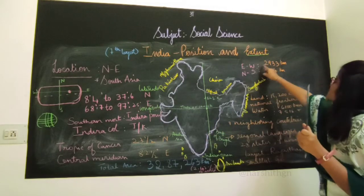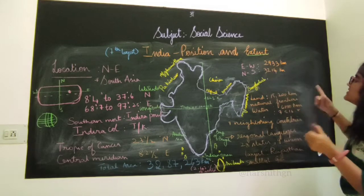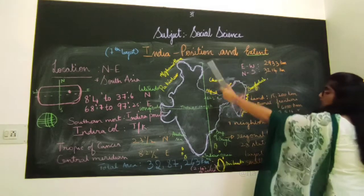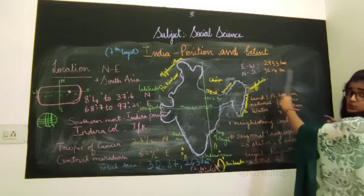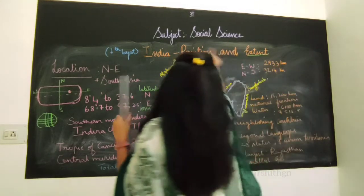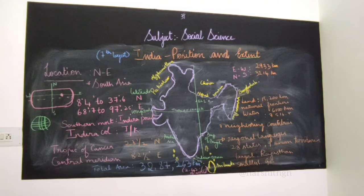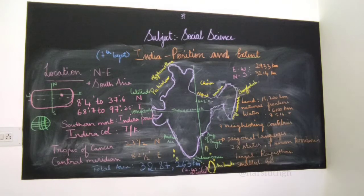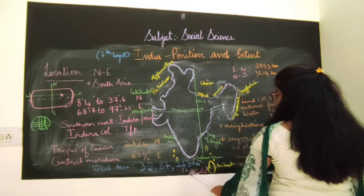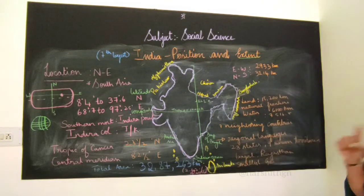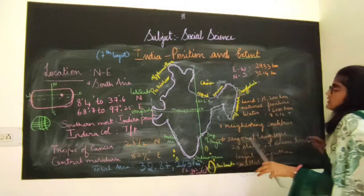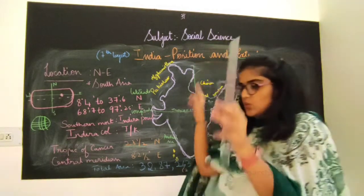East to west, India extends 2,933 km, and north to south it is 3,214 km. The total area of India is 32,87,263 km², which covers 2.4% of the world's land area.